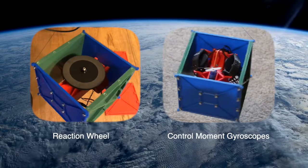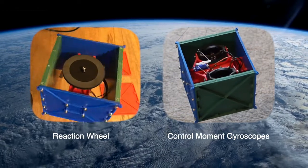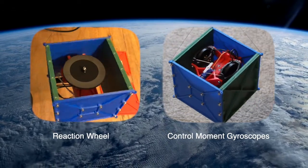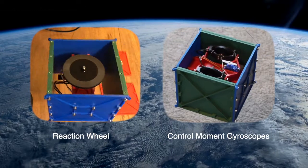Control moment gyros are not to be confused with reaction wheels. The difference is that they rotate at constant speed and instead create torque by tilting the gyroscope axes.